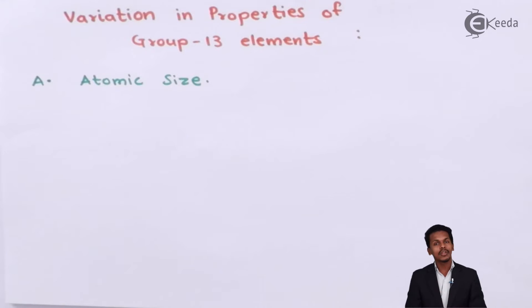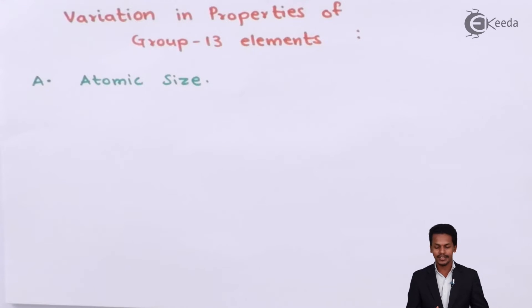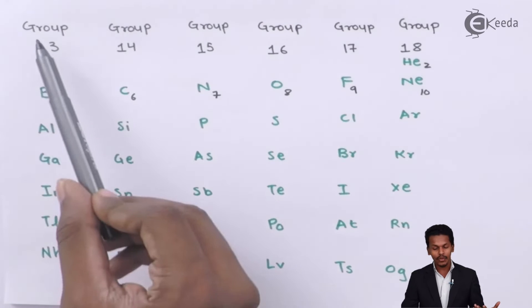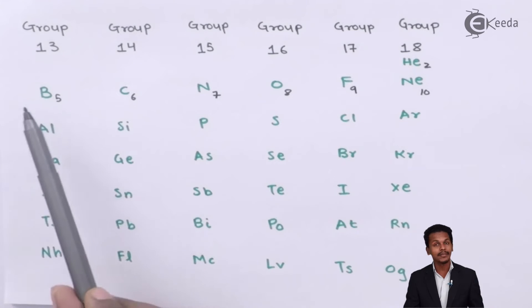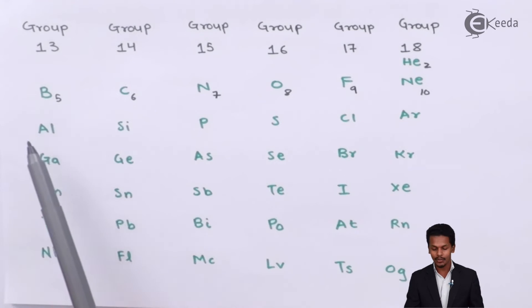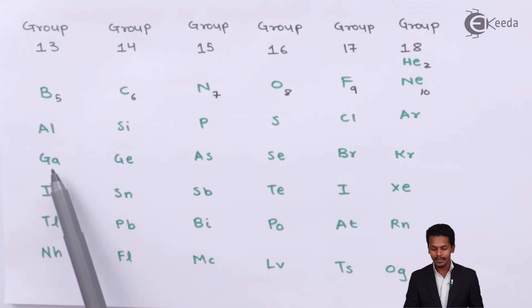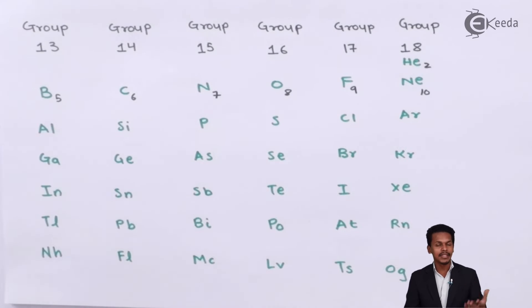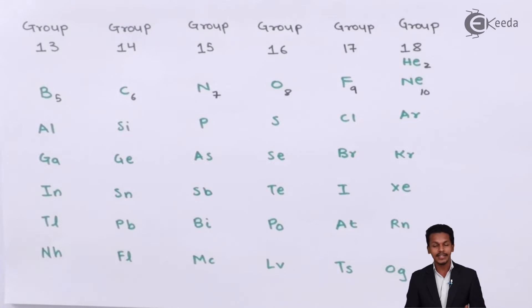Before talking about atomic size, let me discuss about the group 13 elements. Those are basically Boron, Aluminium, Gallium, Indium, and Thallium. These are the elements we are going to talk about, and now let us discuss about the atomic size.